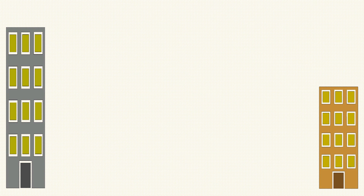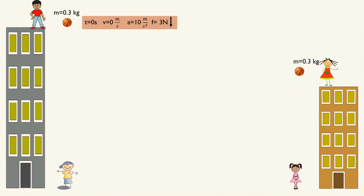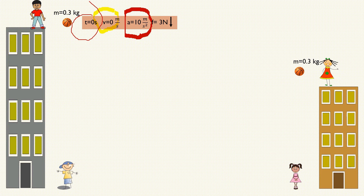Up to this point we've covered a large section of the lesson. However, we also need to differentiate between momentum and force. Consider two boys and two girls on different buildings. People on the surface have basketballs of equal mass and size, both allowed to fall freely under gravity. At time zero the velocity is zero, and we know the acceleration of free fall is 10 meters per second squared.